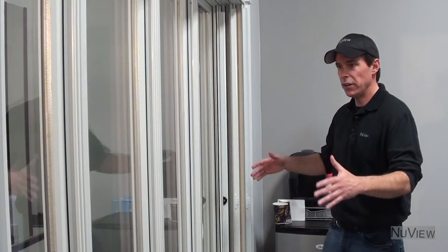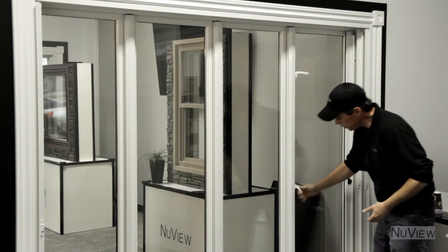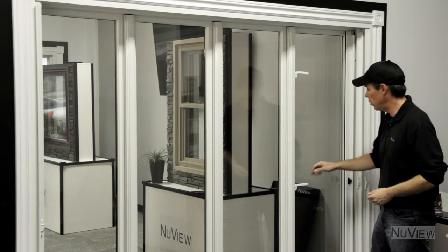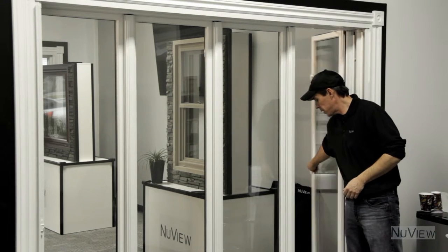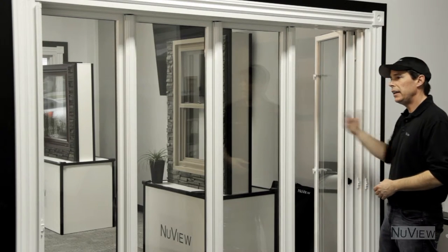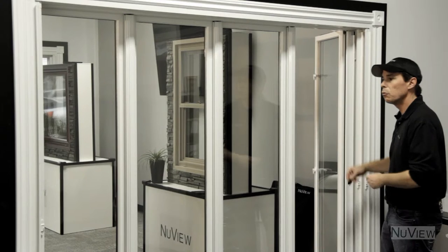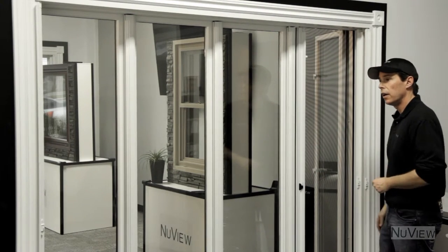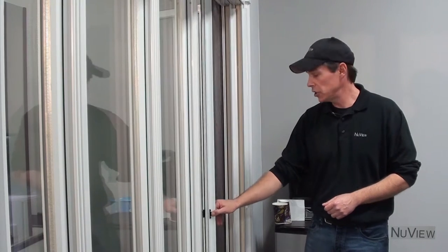For your first option, you simply unlock the window exactly the same way you do the casement window. Open it up, lock it into place. Now you have in and out access through one of the panels. You can close your insect screen and still have great ventilation.